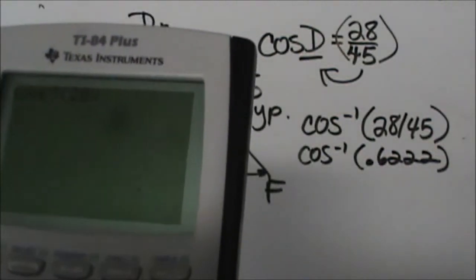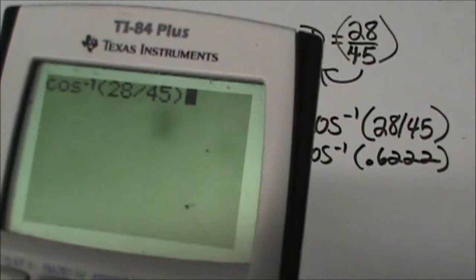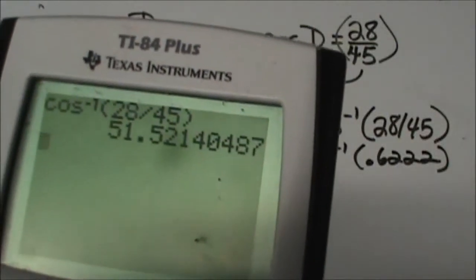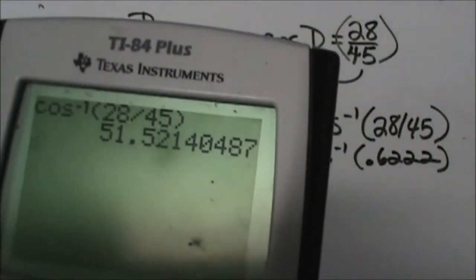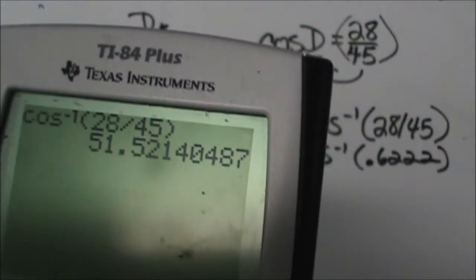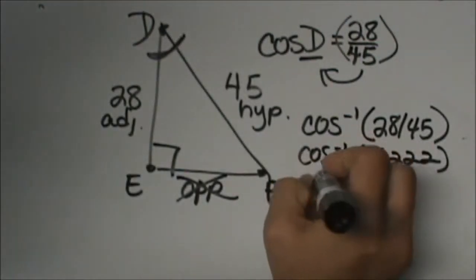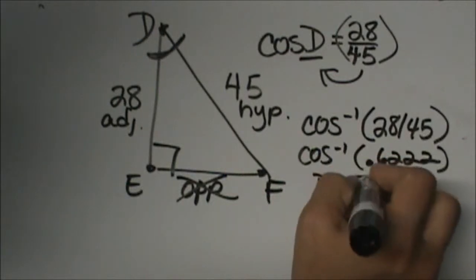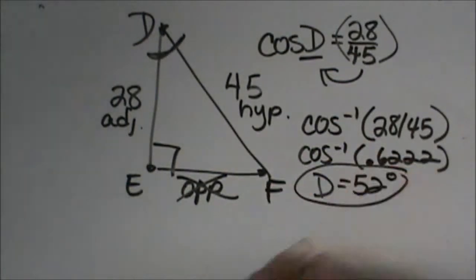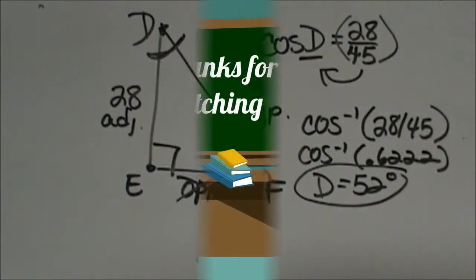28 divided by 45. Okay, so there it is. And that means my angle is 51.5 or I would round that up to 52 degrees. So that means D is 52 degrees. And I figured out my angle. Okay, so that's how you figure out the angle measure at D.